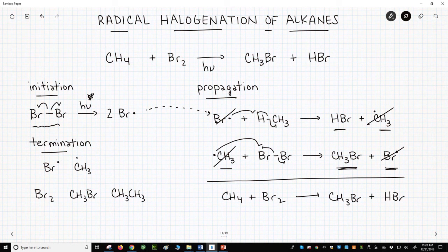One final point. Radical halogenations are an example of a substitution reaction. From carbon's perspective, on methane, we're substituting a bromine in place of a hydrogen.